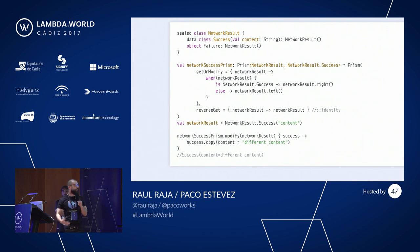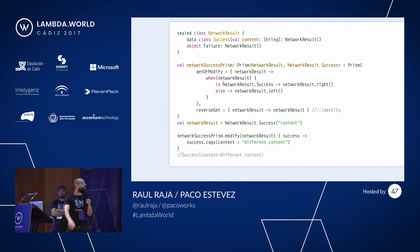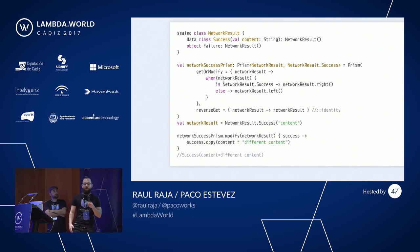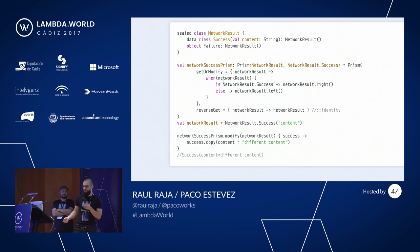Another optic we've already seen in this conference is the Prism. We can use a Prism for a sum type. Let's imagine we have a NetworkResult which can be a Success or a Failure. What a Prism does is abstract the way of pattern matching and constructing the value. You have a getOrModify and basically what you have to tell the Prism is: is it a success value? If it is a success value, it is Right. If it's not, then it's Left. So now the Prism knows what is the success value and what is the failure value.